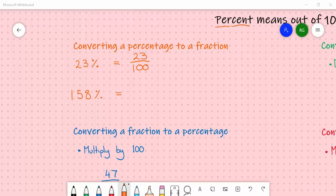If we had 158% following the same principle, it's 158 out of 100. I might throw in one more example now.